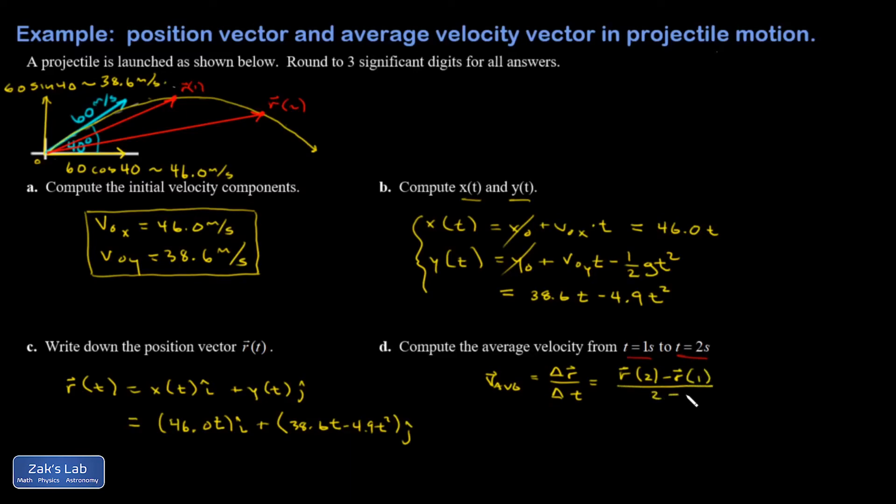And that's the position vector evaluated at t equals 2 minus the position vector evaluated at t equals 1, all divided by 2 minus 1 seconds. So we have to evaluate r of 2 and r of 1 by plugging in t equals 2 everywhere in here and then plugging in t equals 1 everywhere in there, and then take the vector difference.